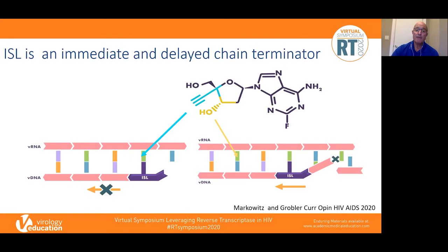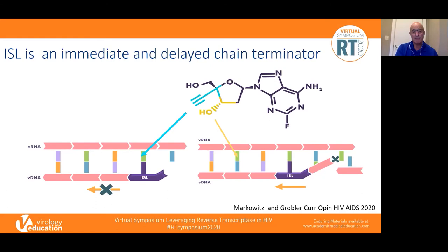The 4-prime ethynyl group actually binds tightly into a very well-conserved portion of reverse transcriptase near the primer site, and this binding causes immediate chain termination. In addition, the presence of this hydroxy group increases the affinity of the drug for reverse transcriptase because it looks more like natural substrate. The presence of this hydroxy group also allows for delayed chain termination — so we have two mechanisms: the initial lock in place, which prevents translocation, and then prolonged activity where that prevention of translocation combined with the hydroxy group allows for delayed chain termination.